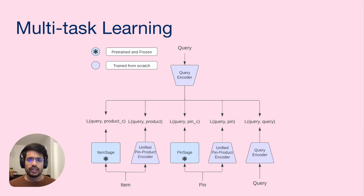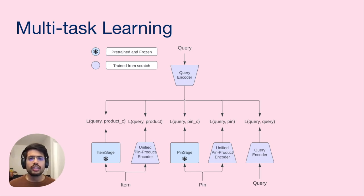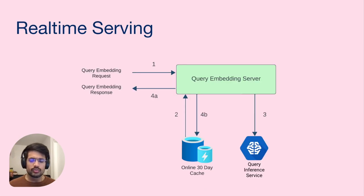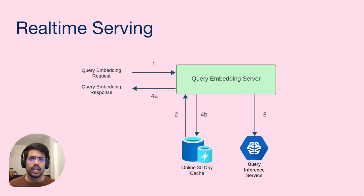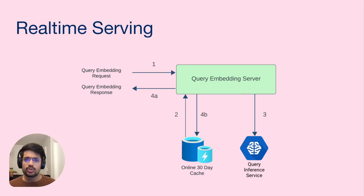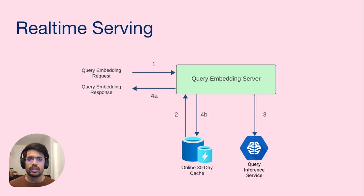We demonstrate the effectiveness of this strategy over use-case specific embeddings through offline experiments highlighting either improved or equivalent performance, which is detailed in our paper. Our paper also discusses the techniques we use to serve the transformer-based query embedding model in real-time, maintaining almost 100% coverage and achieving a P90 latency of 20 milliseconds for 300 QPS. This efficiency is made possible through a cache for popular and frequent queries, coupled with efficient C++ implementations of the various model components and model server.